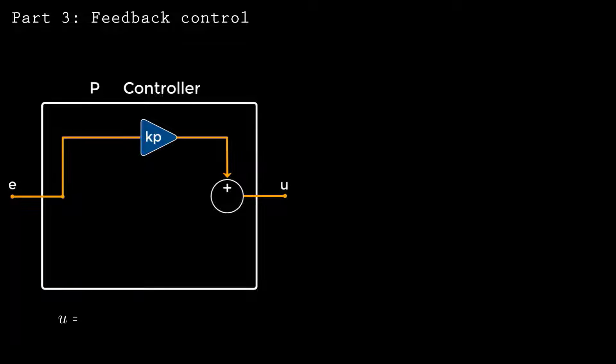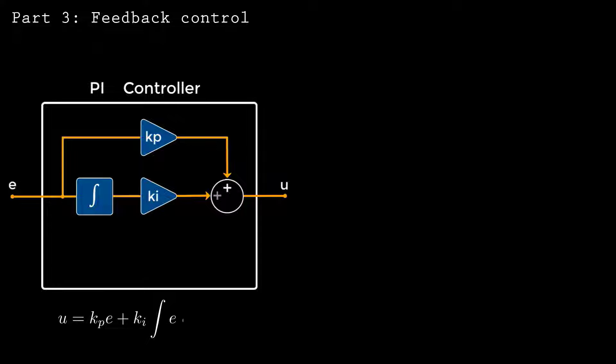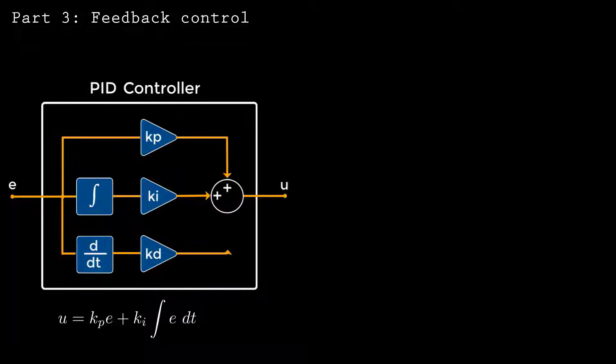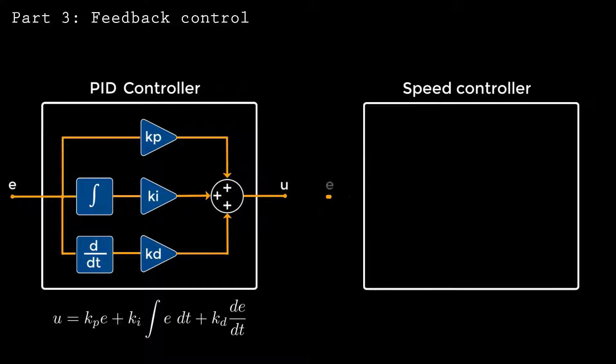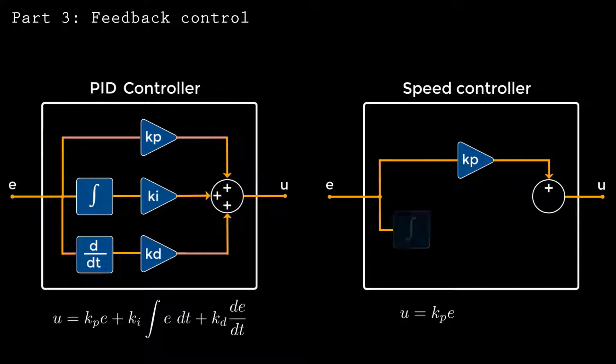PID control is an easy-to-implement all-purpose method that works to control a variety of systems. There are three terms in PID control: proportional, integral, and derivative. That's what PID stands for. For speed control, we'll start with a proportional controller. To reduce steady-state error, we'll add an integral term, and we'll drop the derivative term altogether. So really, we'll use a PI controller.